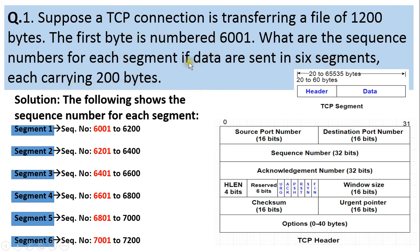In this example, a file of 1200 bytes is being transferred using a TCP connection. This entire file of 1200 bytes is split into 6 TCP segments having 200 bytes each — meaning the file is divided into 6 equal-size segments carrying 200 bytes. The first byte number is 6001, and we are supposed to write down the sequence numbers carried in each segment.